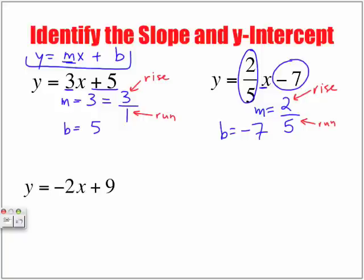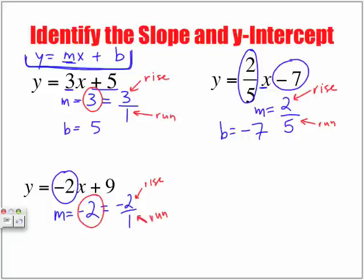Let's look at another example. Y is equal to negative 2x plus 9. Again, the value in front of x when in this format of y is equal to mx plus b is our slope. So our slope, m, is equal to negative 2. Whenever we have a whole number, we can write this slope down as negative 2 over 1 to show us the rise and run.